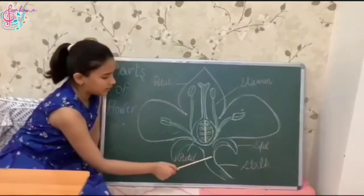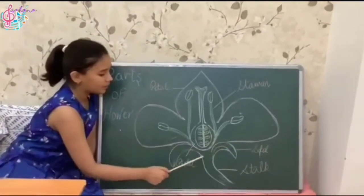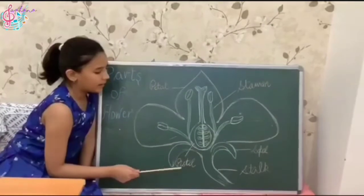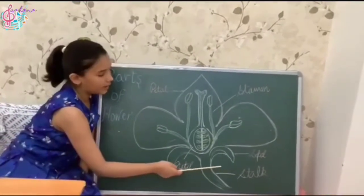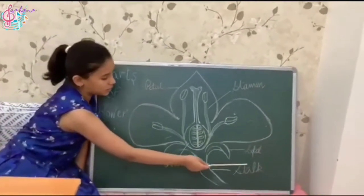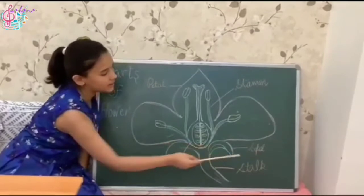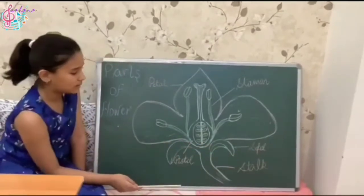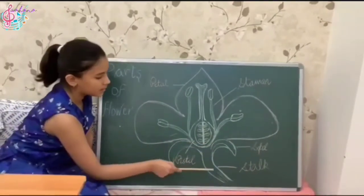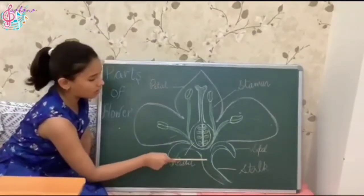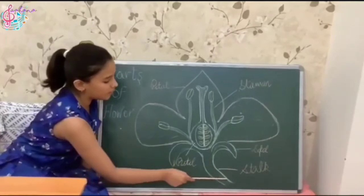These are the leaf-like structures that protect the flower in bud stage. These are called sepals. This is the stalk which is connected to the branch.